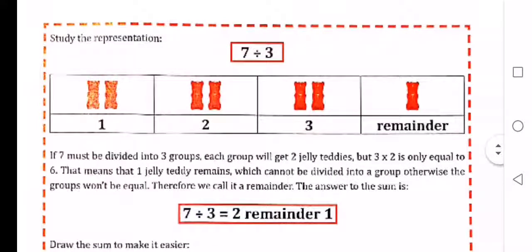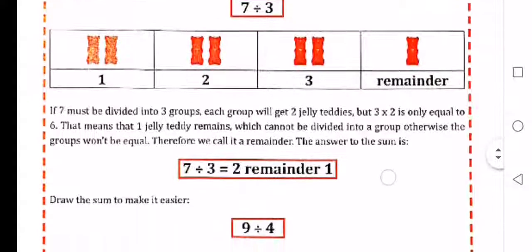Study the representation. 7 divided by 3. So if you're going to divide it by 3, draw your 7 gummies, and you'll see you can make 3 equal groups and 1 will remain.